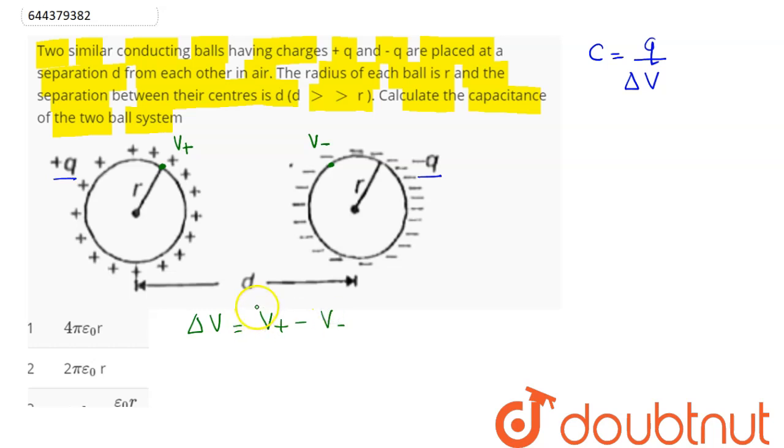So this can be written here as potential on its surface, let's say due to this +q charge will be equal to kq divided by small r. Now since d is very very greater than r, so this -q has no potential on this V+.